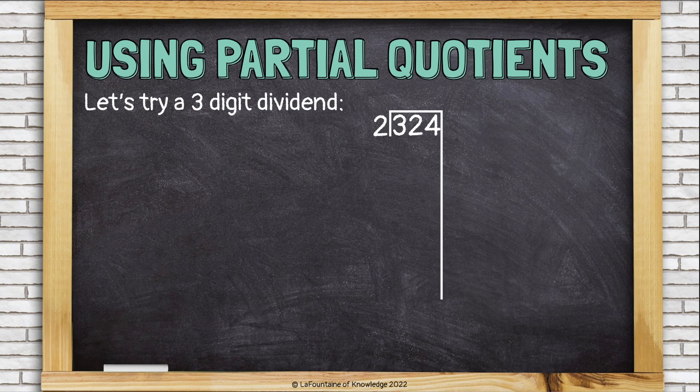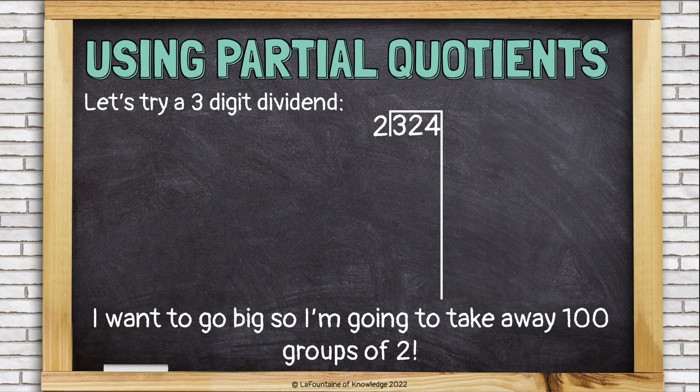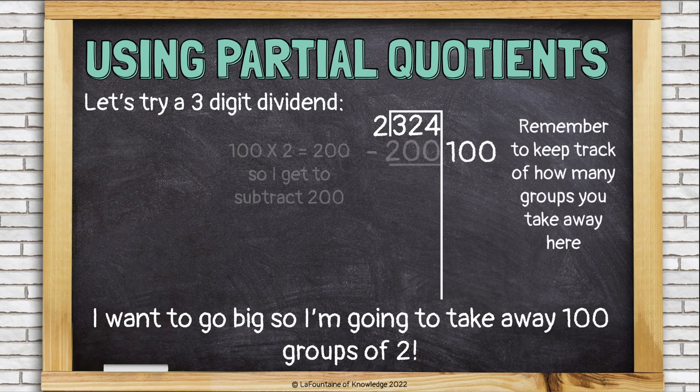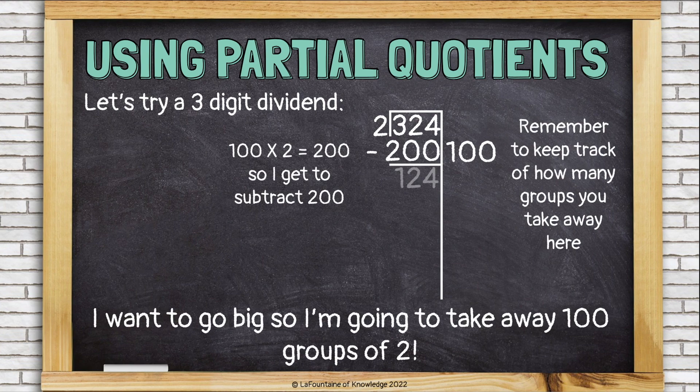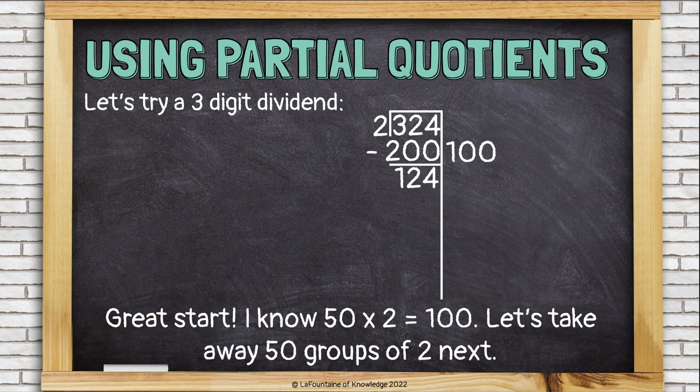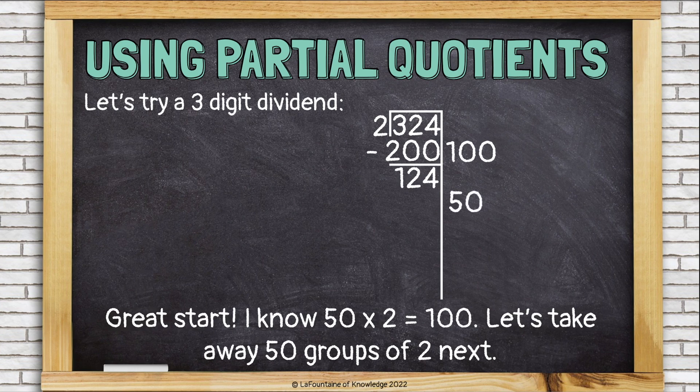Let's try a three-digit dividend. This time, 324 divided by 2. I want to go big, so I'm going to take away 100 groups of 2. That's 200, and I'm left with 124. Great start. I know 50 times 2 is 100, so let's take away 50 groups of 2 next. Down to 24.